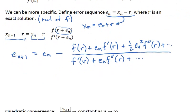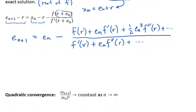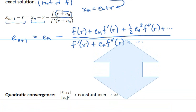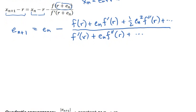Now that we have this form, we have a Taylor series in the denominator. We're going to use the trick of converting that to a geometric series, something that looks like a geometric series, so that we can take it out of the denominator. To get there, we'll notice that since r is a root of the function, f(r) is zero by definition, and then we can factor out e_n times f'(r) from the numerator.